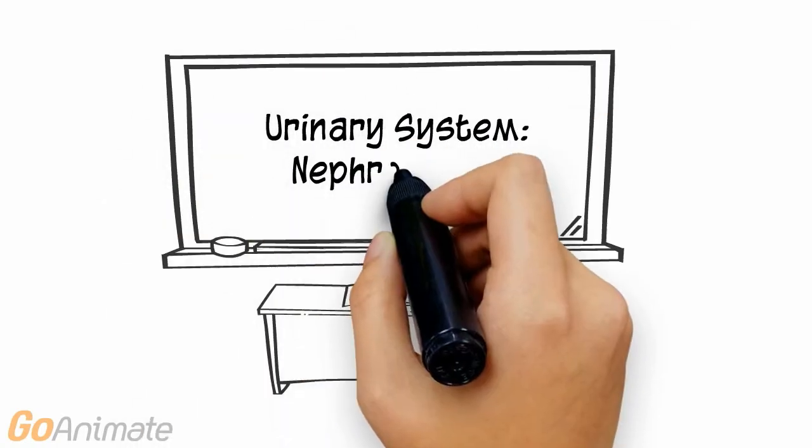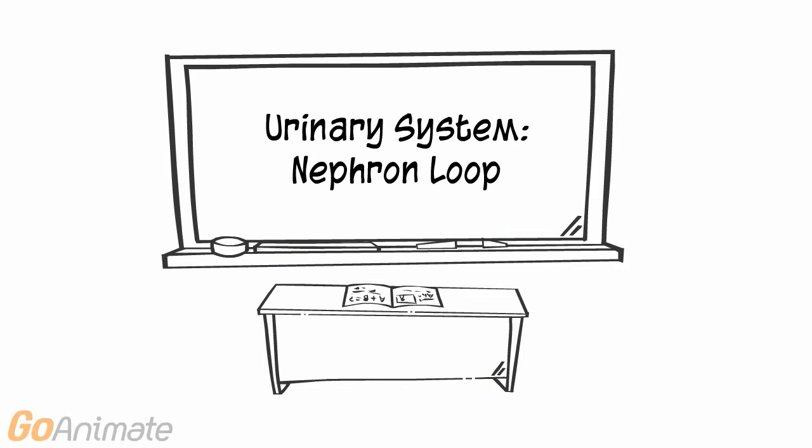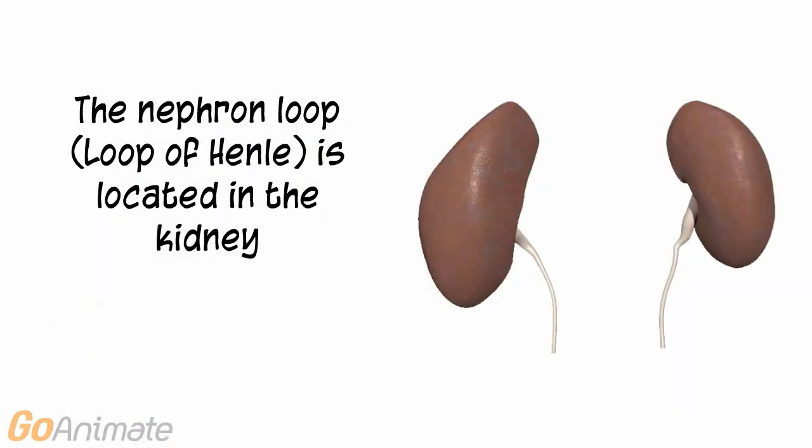Let's learn about the Nephron Loop. The Nephron Loop or Loop of Henle is located in the kidney, specifically in a tiny part of the kidney known as the Nephron.